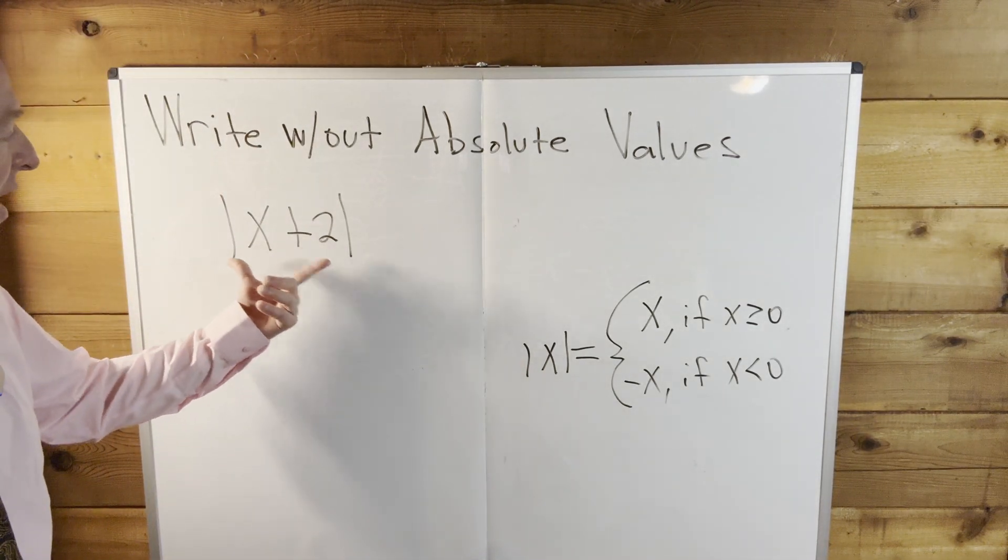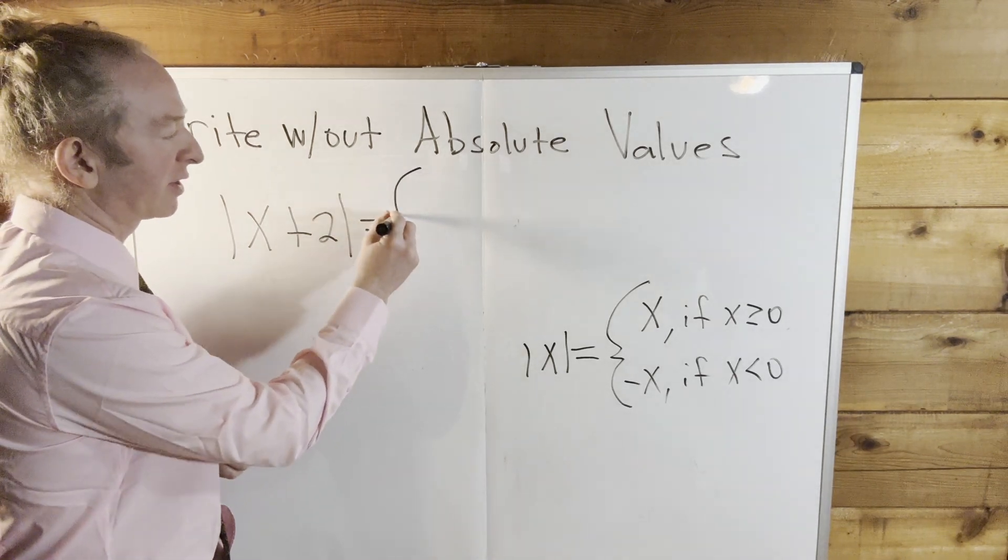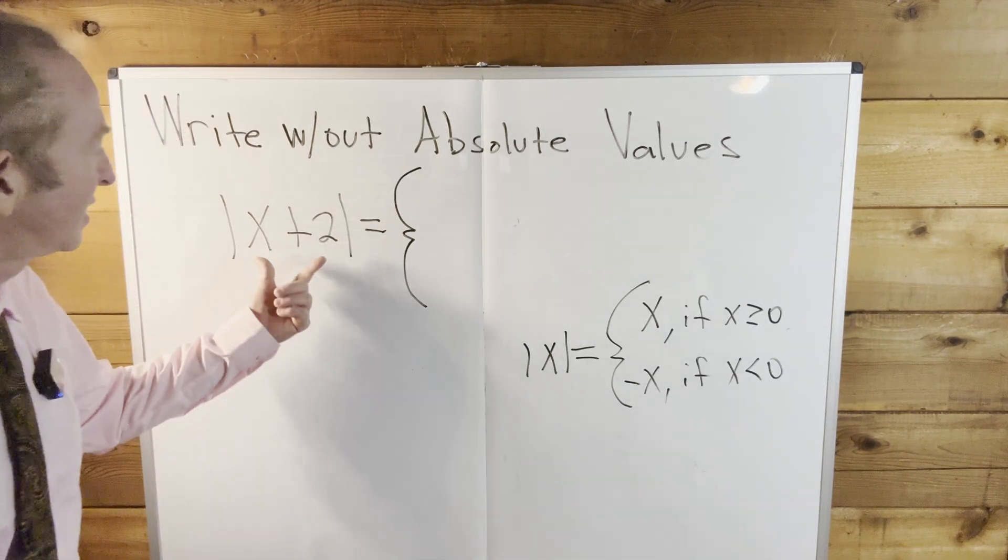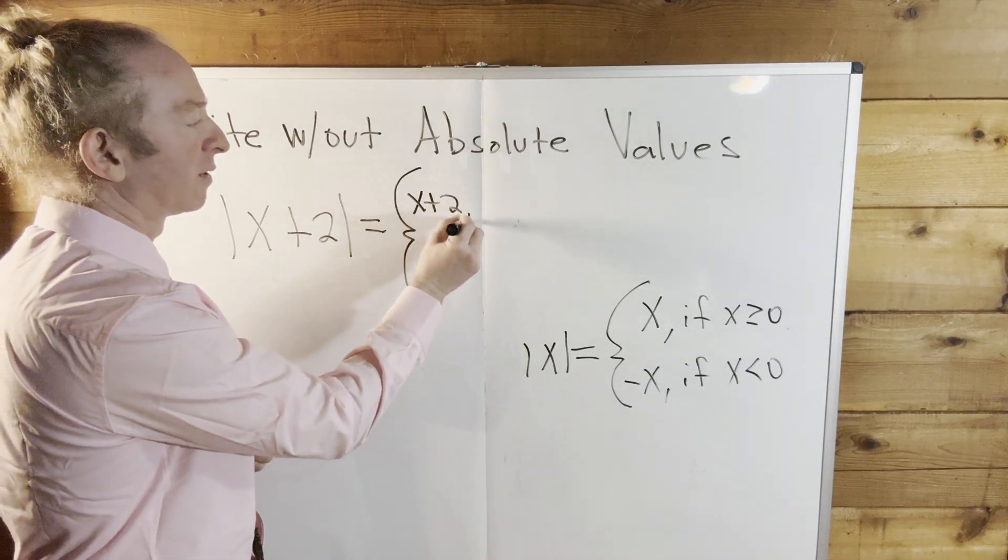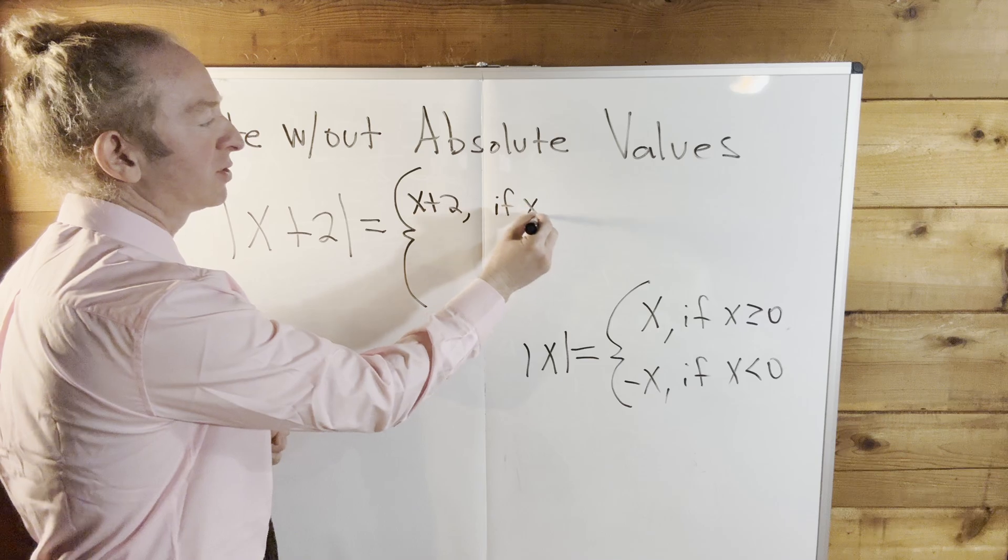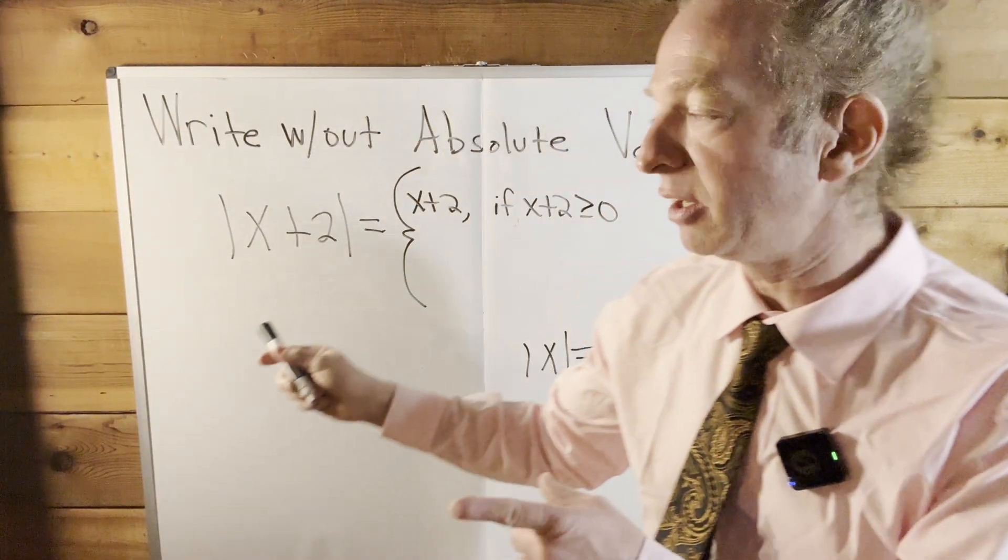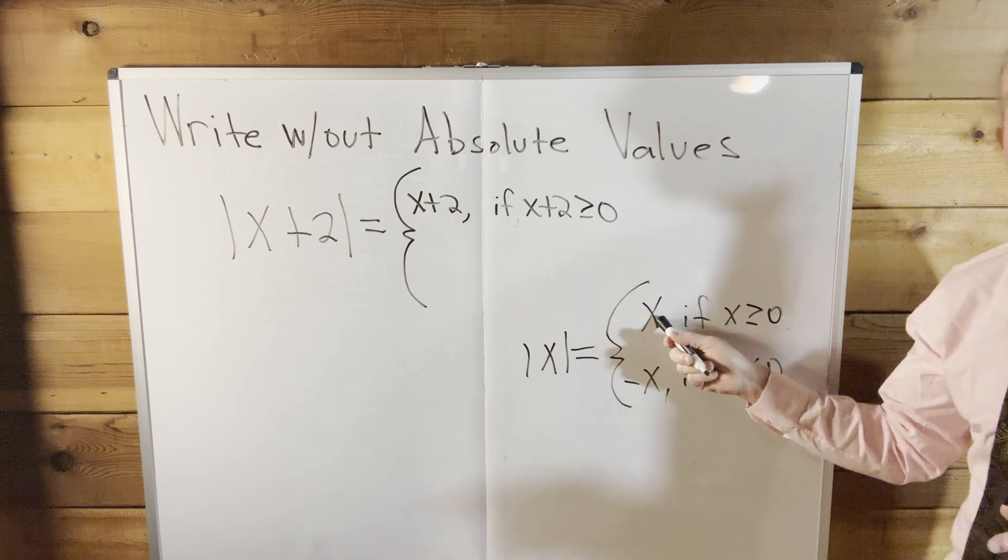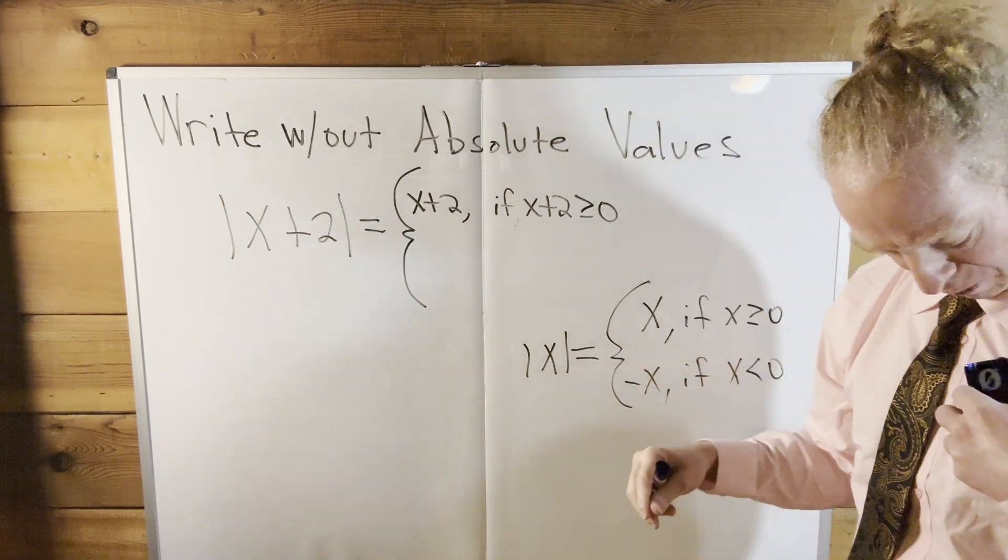In this particular example, we have x plus 2. This is equal to a piecewise function. Instead of x, we have x plus 2. So it's going to be x plus 2 if x plus 2 is greater than or equal to 0. All we've done here is we've replaced the x with x plus 2.